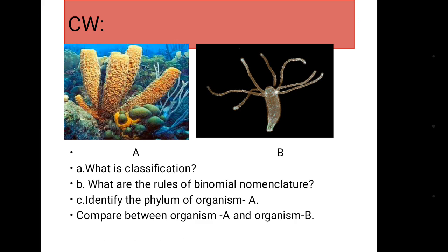This is your classwork for today. A: What is classification? B: What are the rules of binomial nomenclature? C: Identify the phylum of organism A — it is Spongilla, which belongs to Phylum Porifera; write down the characteristics. D: Compare between organism A and B, that is between Spongilla and Hydra, covering both similarities and dissimilarities. You can make a table or write your answer in points, and complete these questions in your copy.